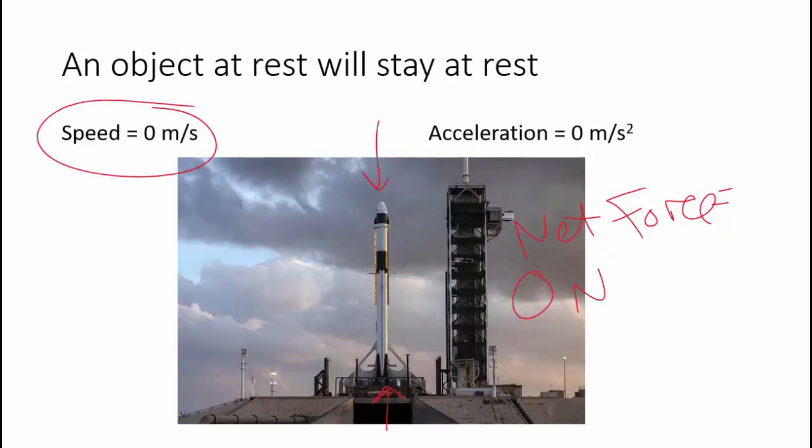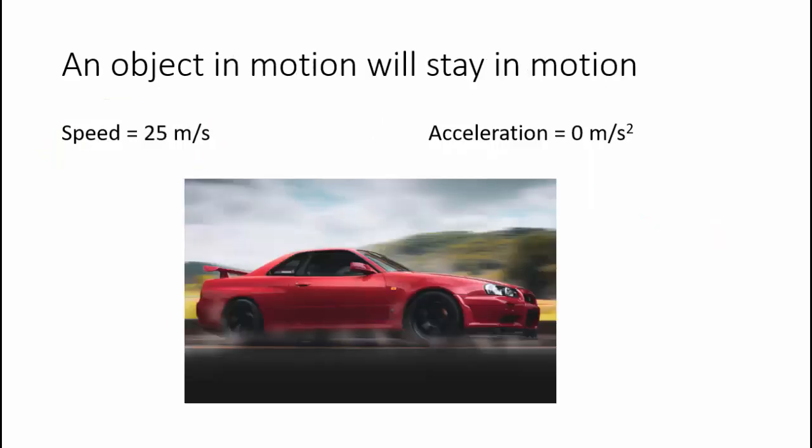So Newton's law says an object at rest will stay at rest. You can see that its speed is zero meters per second. It's not moving. It's going to stay not moving. That seems kind of obvious. But what happens if it is moving? So here you have a car driving. And so it is going 25 meters per second, which is about 55 miles per hour.